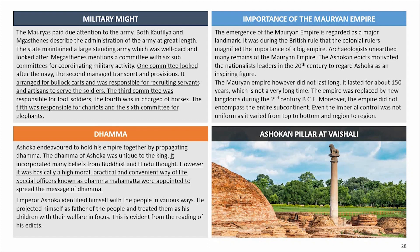Regarding Ashokan Dhamma: Ashoka endeavored to hold his empire together by propagating Dhamma. The Dhamma of Ashoka was unique to the king — it incorporated many beliefs from Buddhist to Hindu thought. However, it was basically a high-moral, practical and convenient way of life. Special officers known as Dhamma Mahamatras were employed to spread the message of Dhamma. Emperor Ashoka identified himself with the people, projecting himself as a father figure treating them as his children with their welfare in focus, as evident from the reading of his edicts.